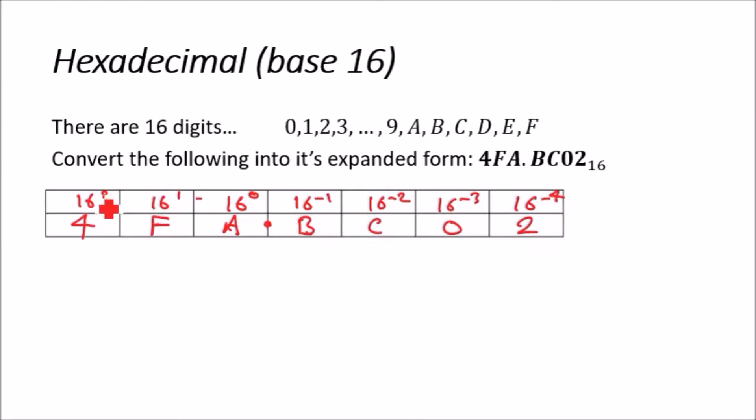Now all you have to do is simply find the sum product of each one. Therefore, the total is going to be 4 times 16 squared, plus F—and remember F has a value of 15—so 15 times 16 to the power 1, plus A, which has a value of 10, so 10 times 16 to the power 0, plus B which...